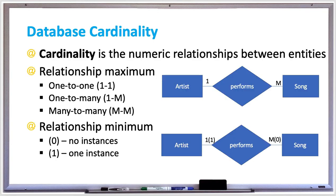Going back to our diagram, we can see that one artist performs many songs. The one in parentheses as the attribute minimum means there is one required artist. The zero in parentheses next to the song table means it is optional, so an artist can perform no songs at all — they could just show up and not sing anything.